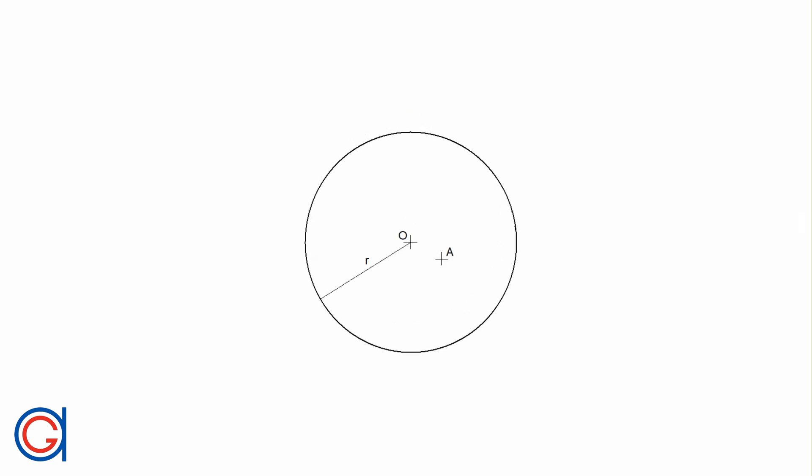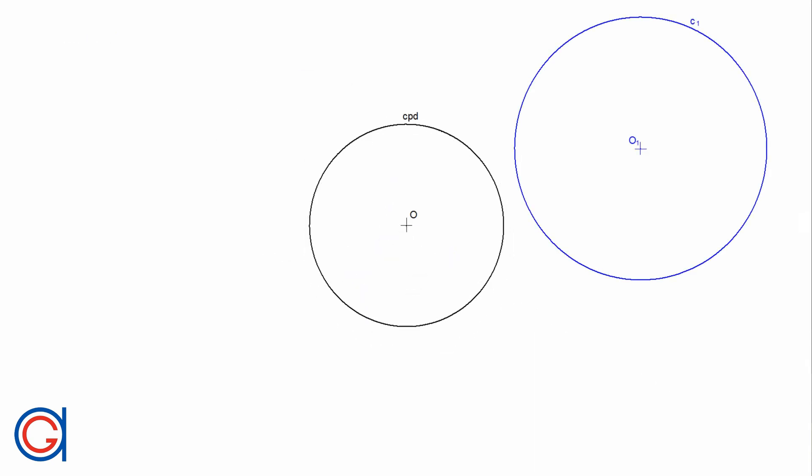The inversion in a circle is a transformation which transforms one point A into its inverse point A prime, whose distances from the origin O satisfy the equation r² = OA × OA prime. Circumference number one is located outside the reference circle.